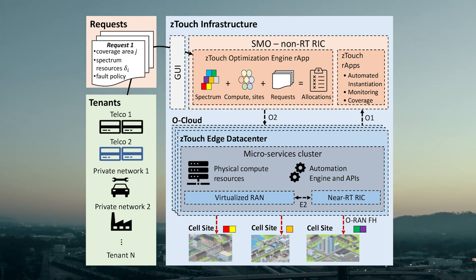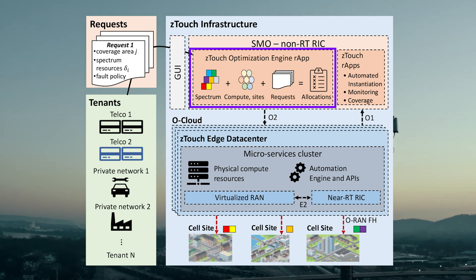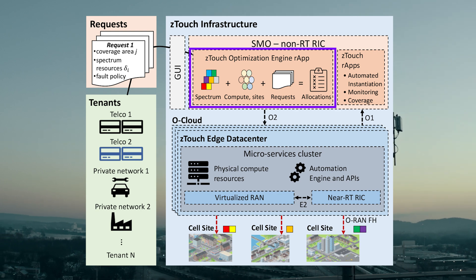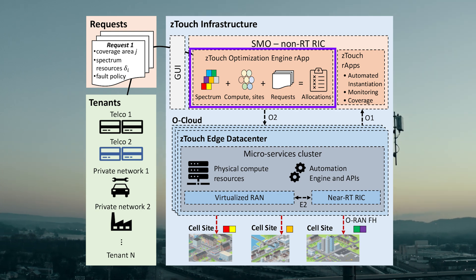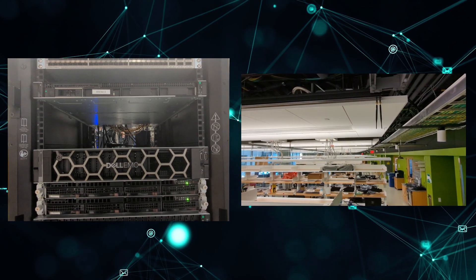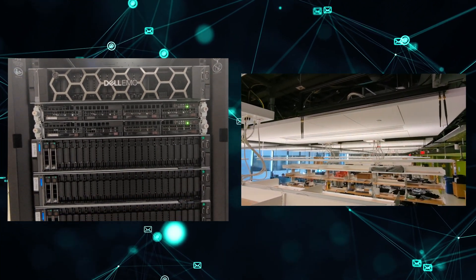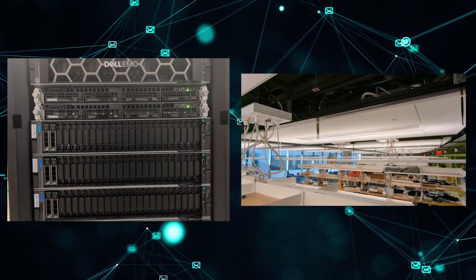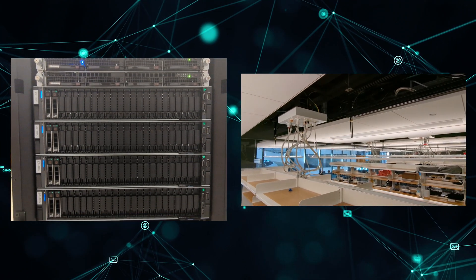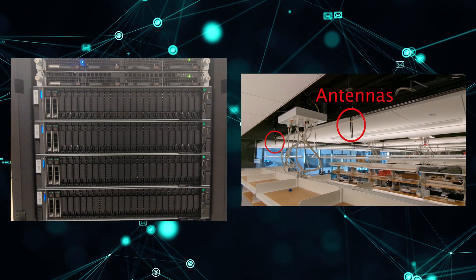Our framework allows tenants to use a GUI to submit their requests. A set of R-apps hosted on the non-real-time RIC process these requests and optimally allocate resources. The system lives on a Red Hat OpenShift cluster and interfaces with an over-the-air 5G testbed, featuring 24 software-defined radios connected to an array of antennas mounted on the ceiling of an indoor space with rich multipath.